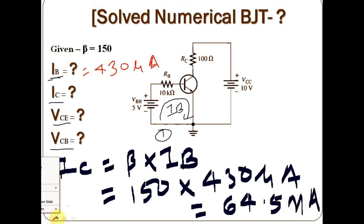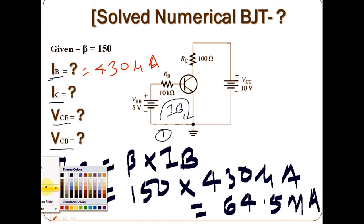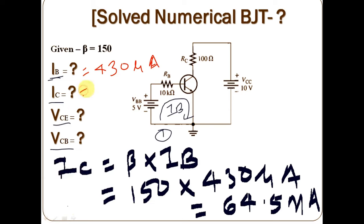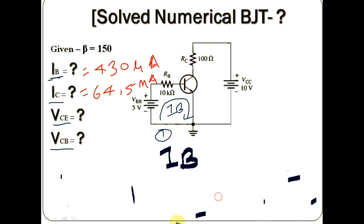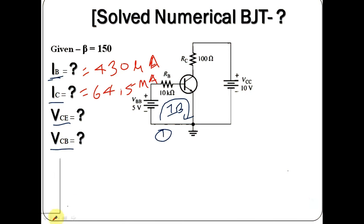So IC equals 64.5 milliampere. Now you have the value of IB and the value of IC. Let us find the next value.